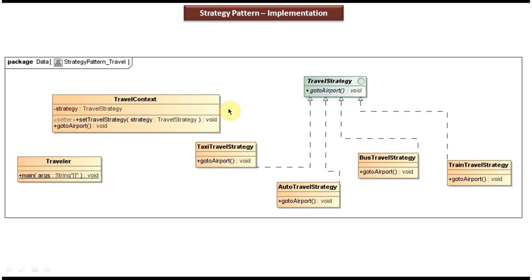This is the class diagram of the scenario we just discussed. At the top you can see TravelStrategy, which is the interface, and it has the goToAirport abstract method. This interface is implemented by four concrete classes: TaxiTravelStrategy, AutoTravelStrategy, BusTravelStrategy, and TrainTravelStrategy, all providing implementation of the goToAirport method. On the left side is Traveler, who chooses a transport mode and sets it in TravelContext by calling setTravelStrategy, then uses that strategy to go to the airport.